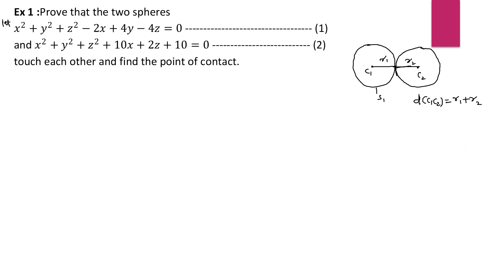The question is: prove that the two spheres S1: x² + y² + z² − 2x + 4y − 4z = 0 and S2: x² + y² + z² + 10x + 2z + 10 = 0 touch each other, and find the point of contact. We will prove they touch each other externally. Two spheres touch each other externally if and only if the distance between their centres equals the sum of their radii.